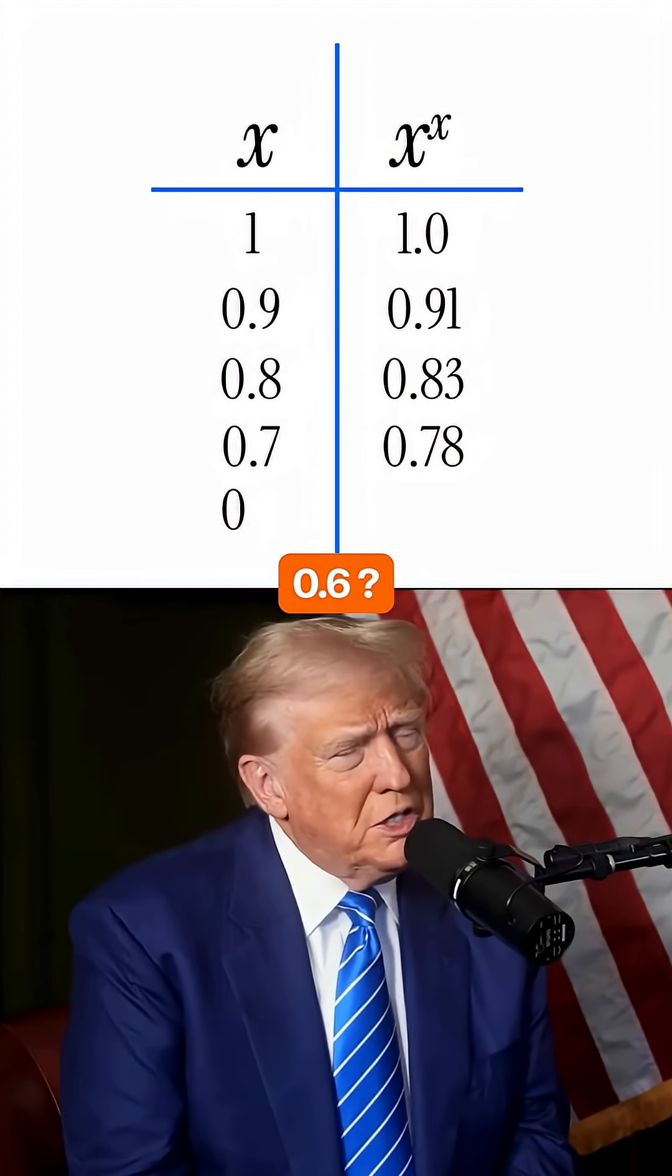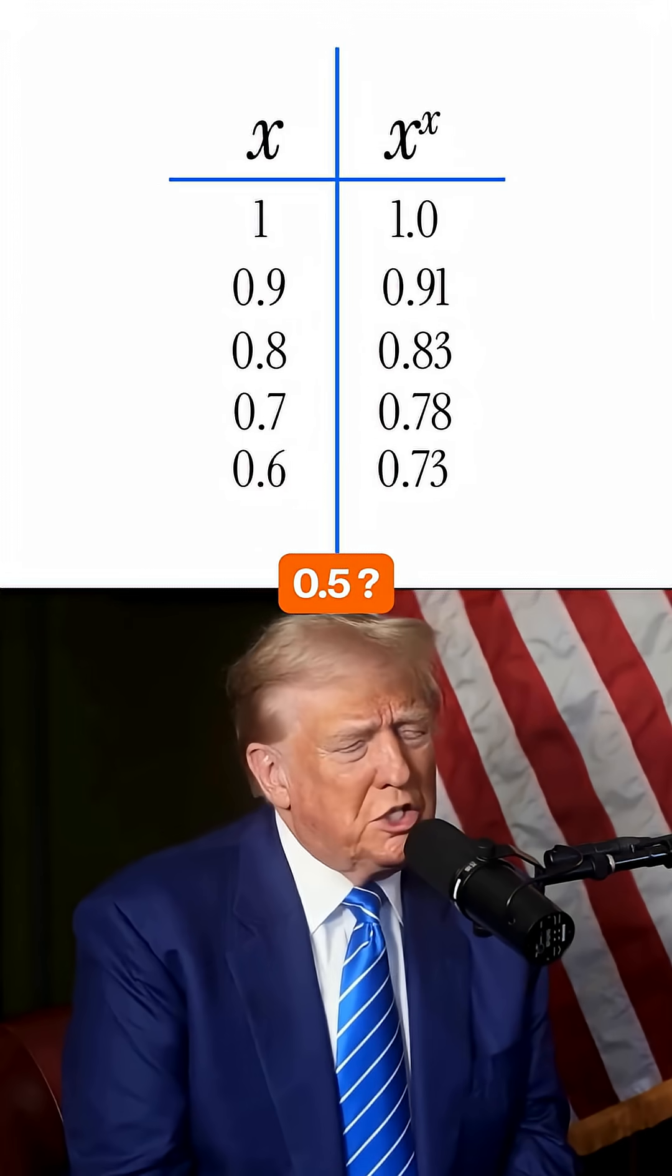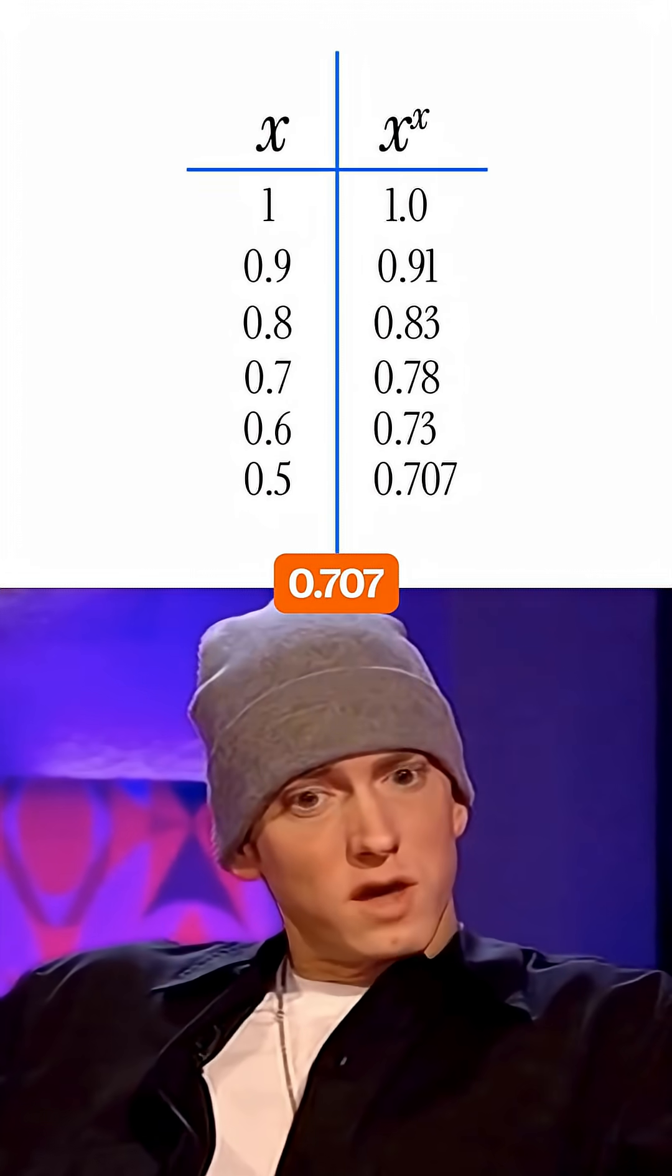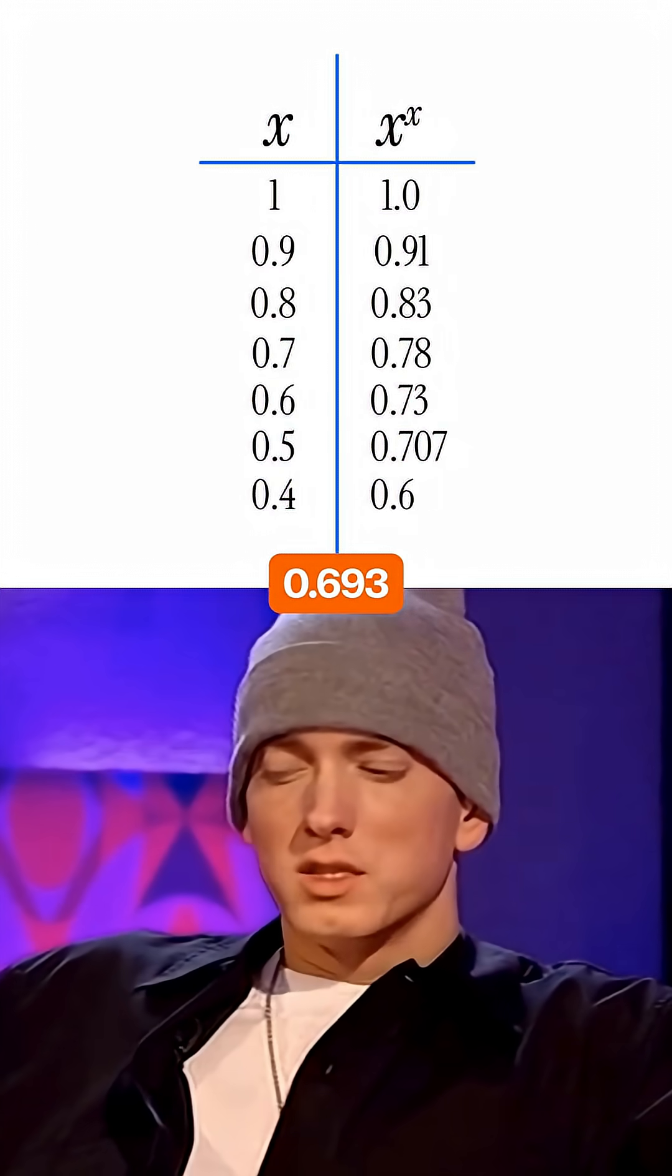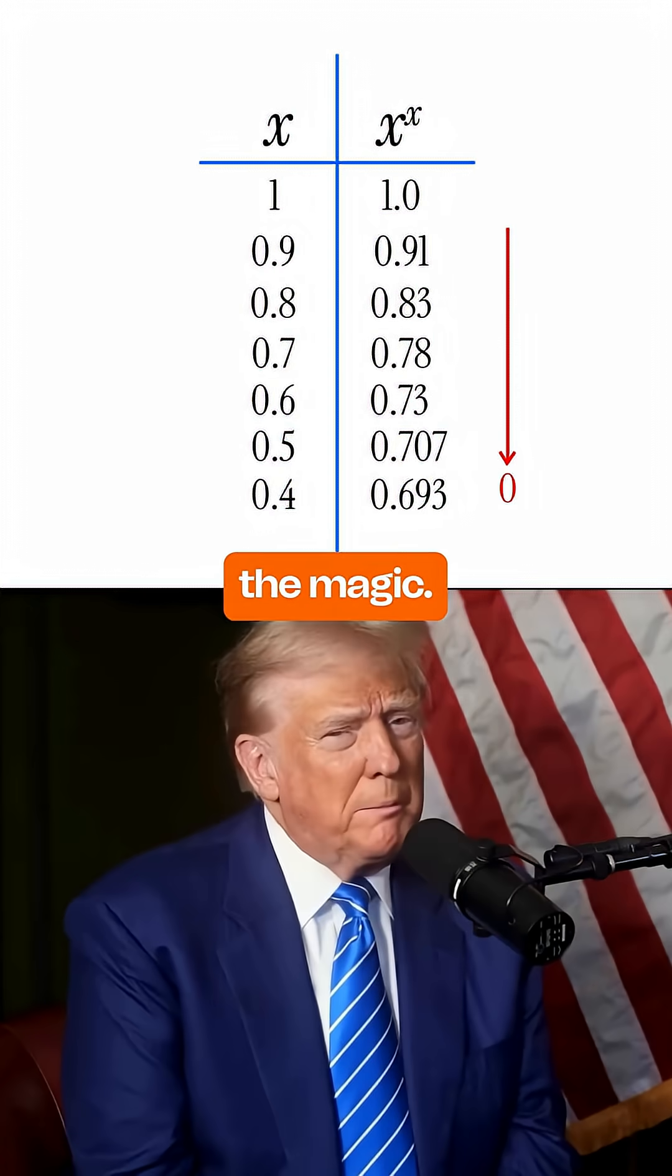0.7 is 0.78, 0.6 is 0.73, 0.5 is 0.707, 0.4 is 0.693. Oh, I saw the pattern. It is going towards 0. Wait for the magic.